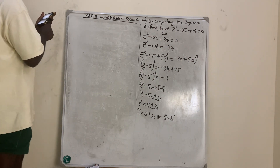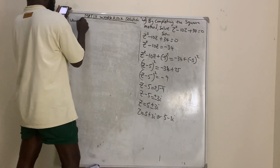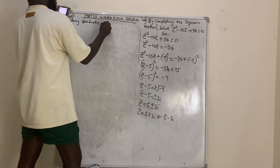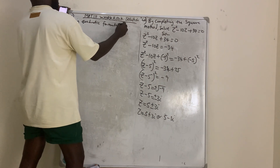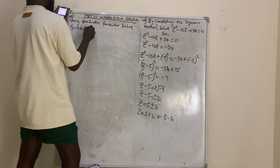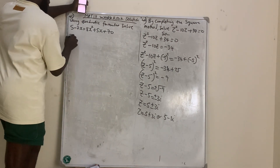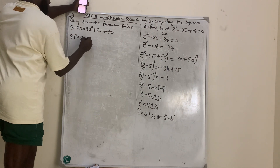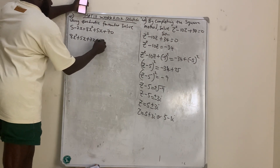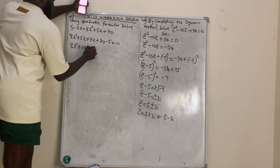Question number 45: using the quadratic formula, solve 5 minus 7x equals 8x squared plus 5x plus 7. Bringing everything to one side: 8x squared plus 5x plus 7x plus 7 minus 5 equals zero, giving 8x squared plus 12x plus 65 equals zero. Here a equals 8, b equals 12, c equals 65.